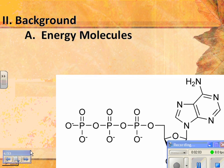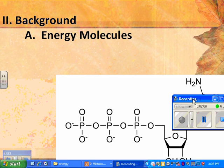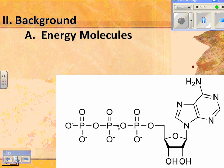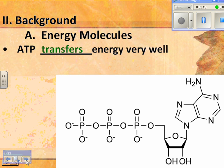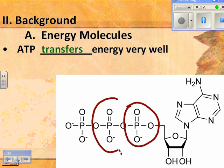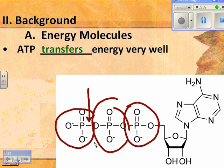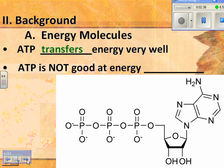First we need to go back and look at energy molecules in general. This is the structure for ATP — adenosine triphosphate — which transfers energy very well. It has a sugar group, a nitrogenous base, and three phosphate groups. If you break one bond and reform some other bonds, you can release a lot of energy. But ATP is not good at energy storage: it doesn't store very much and is very unstable. The bonds will be broken and you'll make ADP.